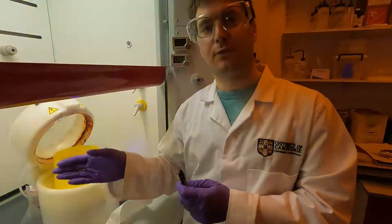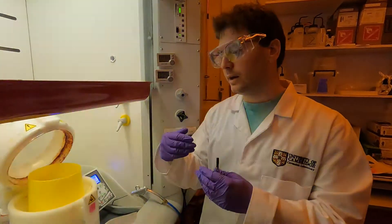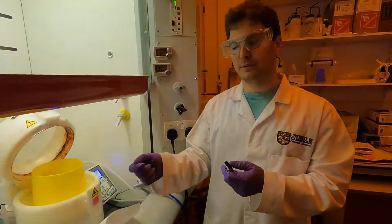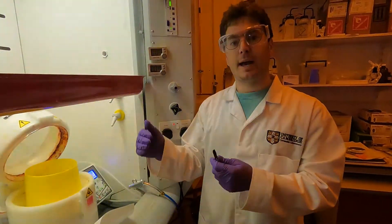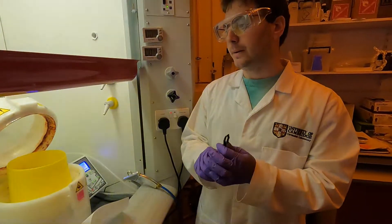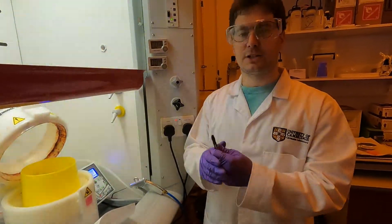It will sit at 65 degrees for one minute. When that one minute is up I will turn up the temperature of the hot plate to 95 degrees. Once the sample reaches 95 degrees I will leave it there for an additional four minutes.